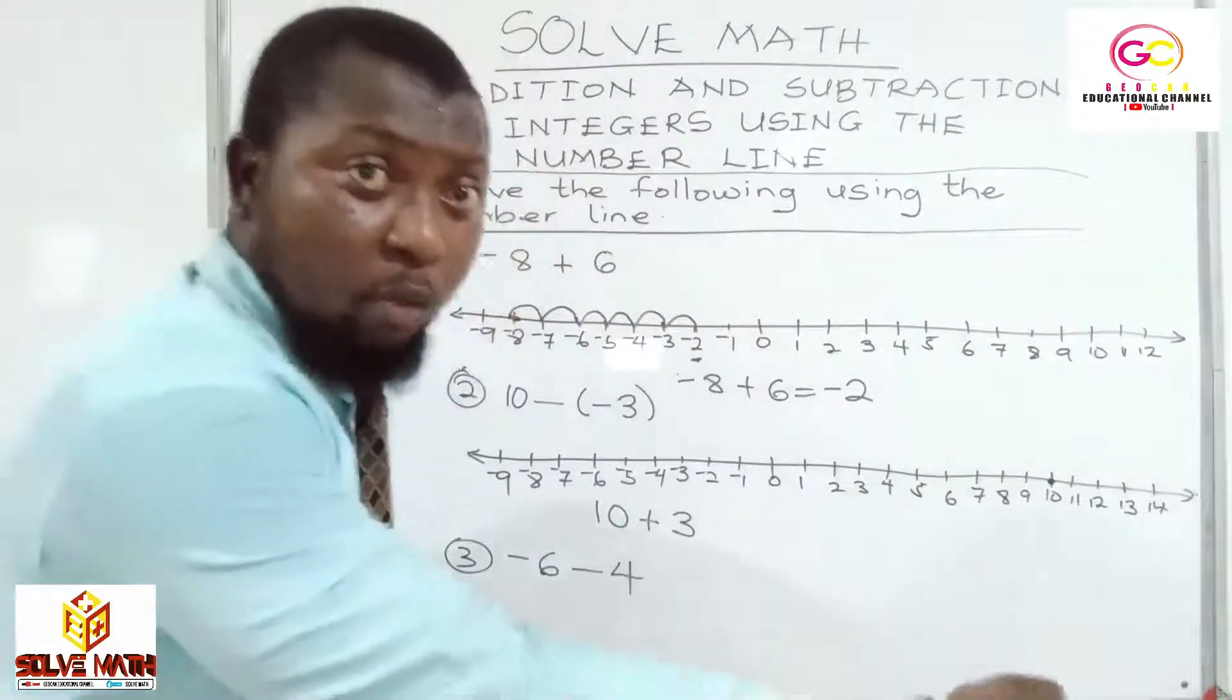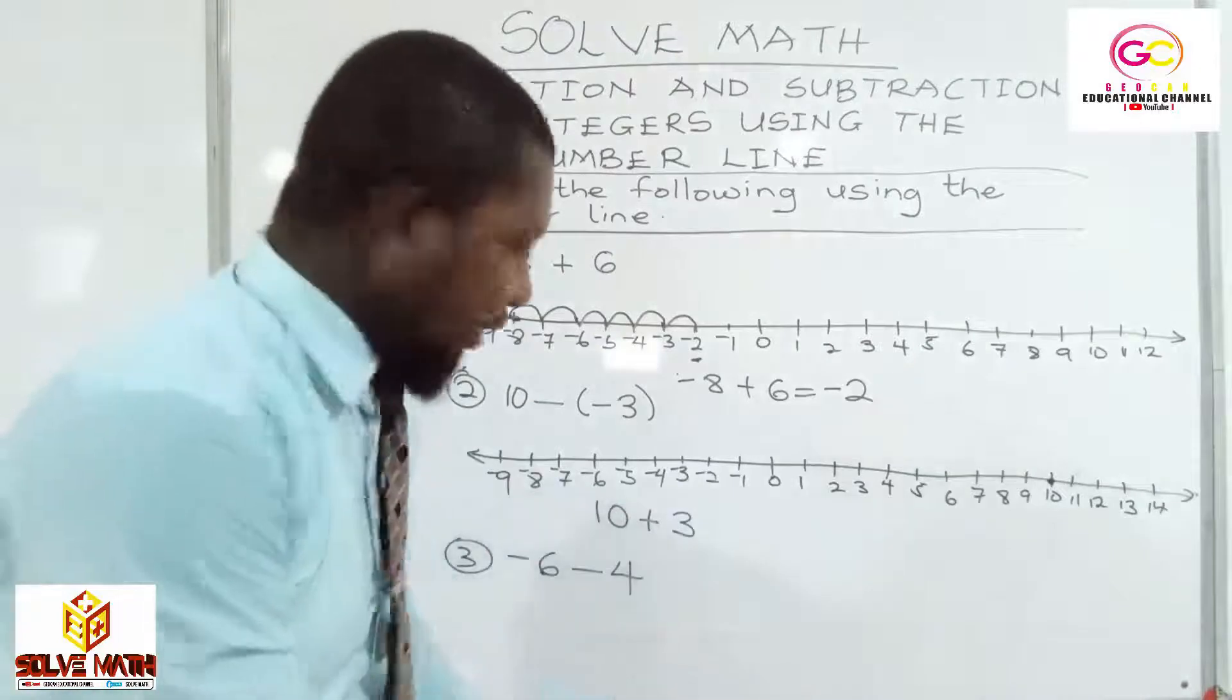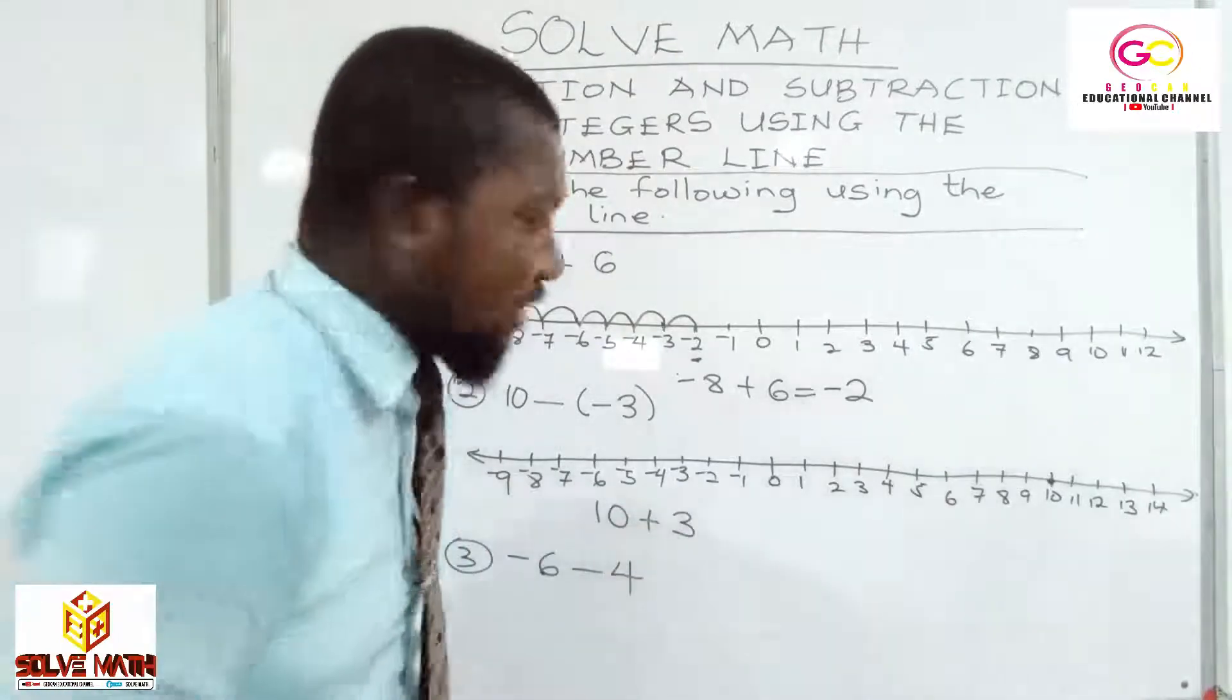And plus 3. Plus. Meaning, we are moving towards what? Our right. But how many times are we moving? It's what? 3 times.